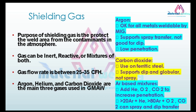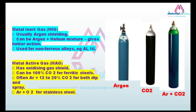The shielding gases used in GMAW protect the weld area from atmospheric contaminants. Shielding gases can be inert, reactive, or a mixture of both. Gas flow during welding is normally kept at 25 to 35 cubic feet per hour. Argon, helium, and carbon dioxide are the main gases used in GMAW. The type of shielding gas used determines whether the process is called MIG or MAG.